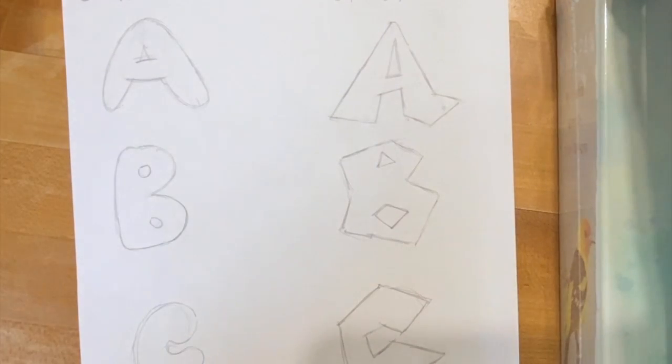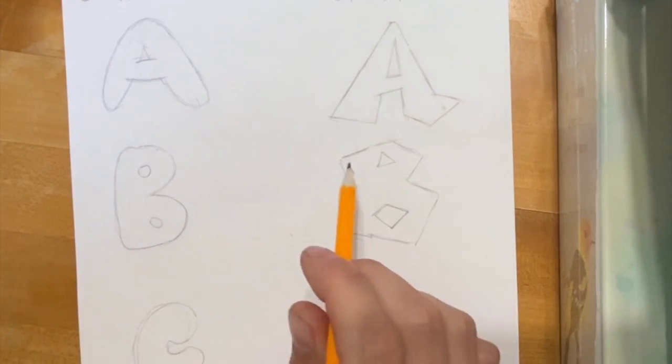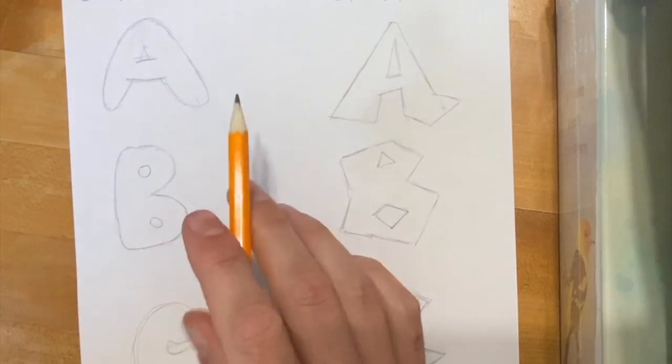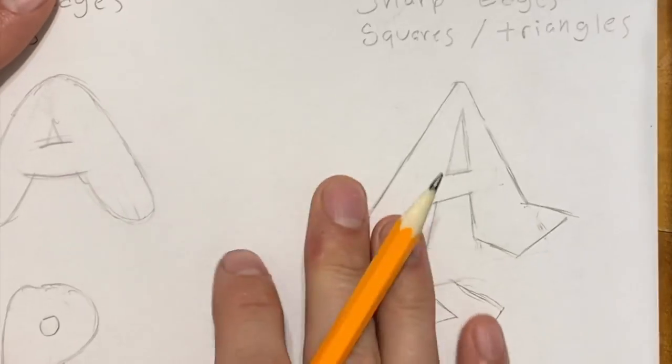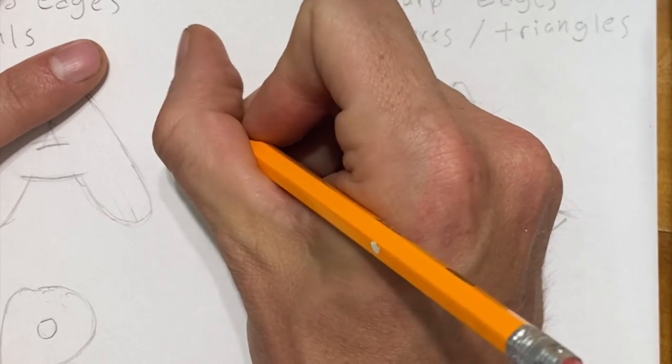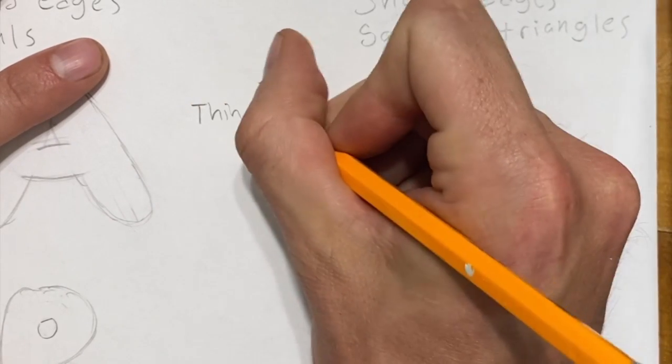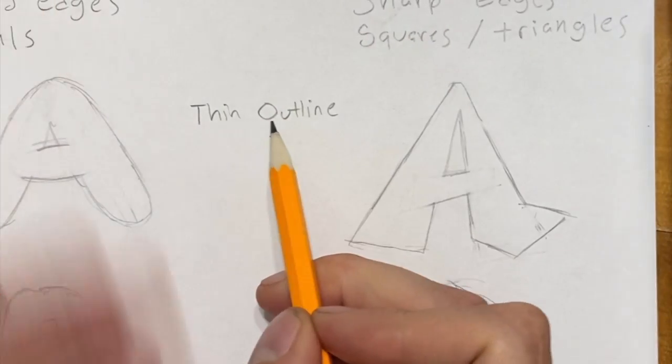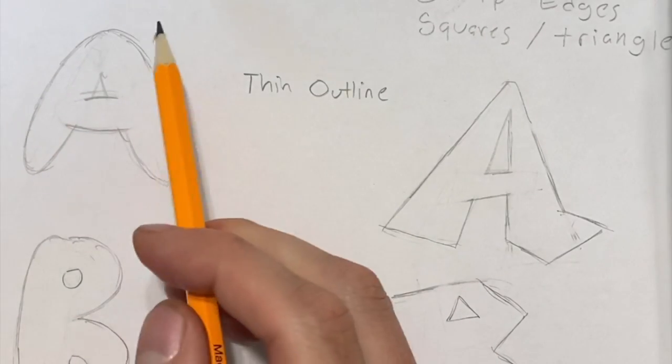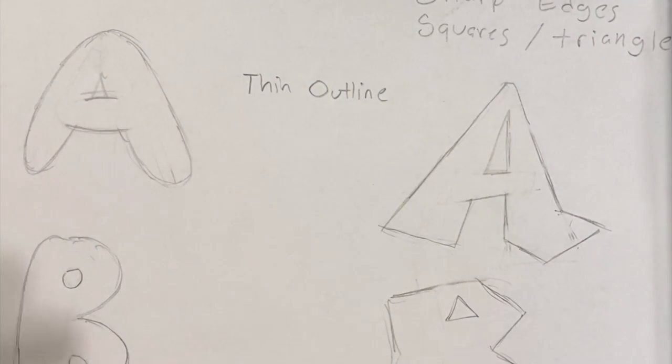Now the next step is we can start adding more details to our letters. I'm going to zoom in here in the center so you can see, but I want you to think about adding a thin outline.